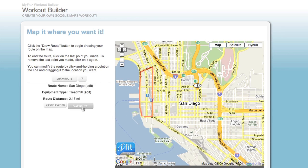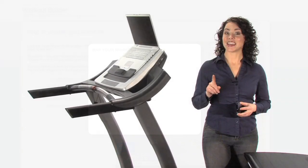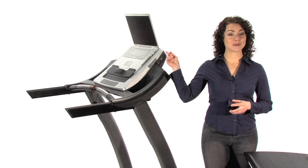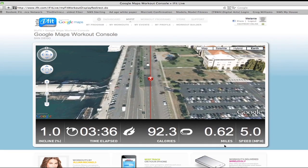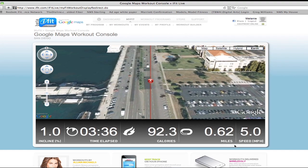iFit turns it into a workout and automatically downloads it directly to your treadmill, elliptical, or other fitness equipment. Then, during your run, using a laptop or smartphone, Google Maps allows you to see your progress and take in the sights.